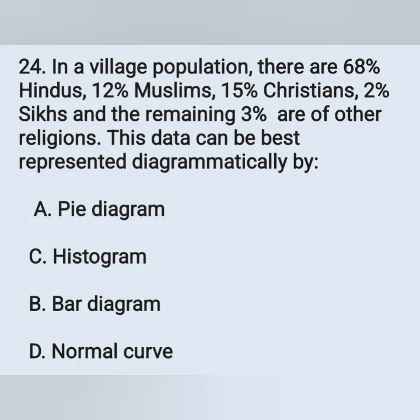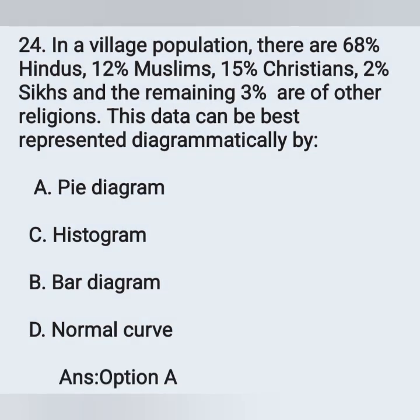Question number 24: in a village population there are 68% Hindus, 20% Muslims, 5% Christians, 2% Sikhs, and the remaining 3% are other religions. This data can be best represented diagrammatically by — option A: pie diagram, option B: bar diagram, option C: histogram, option D: normal curve. It can be best represented by a pie diagram — option A is the correct answer.